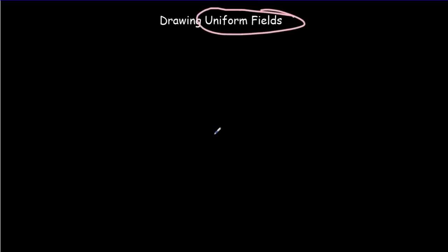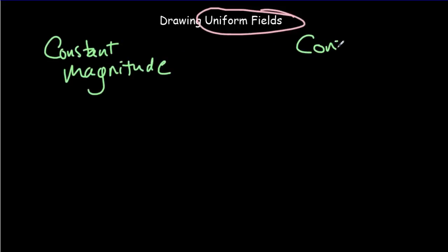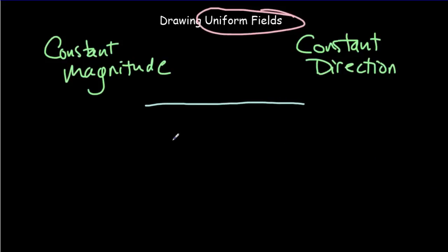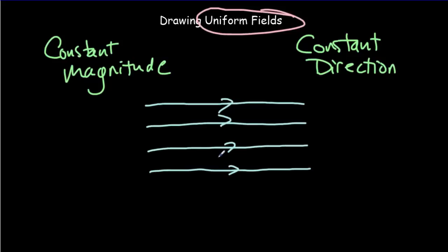A uniform field has a constant magnitude and a constant direction. If it's got constant magnitude, the lines must be equally spaced. If it's got a constant direction, all the arrows point in the same direction. So a uniform field is drawn as straight, equally spaced parallel lines — this is an example of a uniform field line drawing.